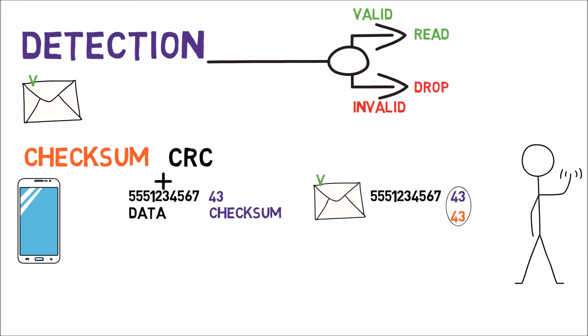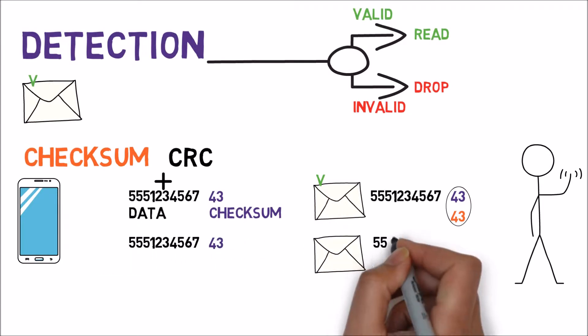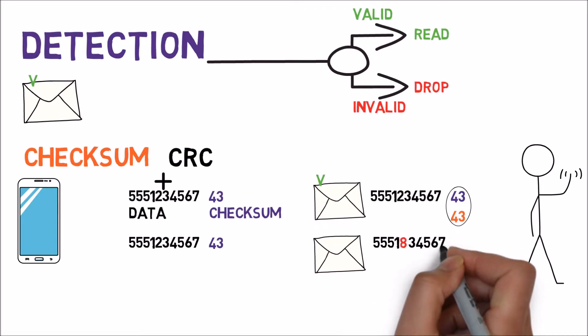What happens in case of an error? Let's say for instance that the digit 2 was replaced by an 8. Now even though the sender sent the following stream, the receiver sees something a bit different. The receiver sees 5 5 5 1 8 3 4 5 6 7 43. Now when the receiver calculates the checksum, she adds all the digits and gets 49. Since this value is different from the checksum value specified in the original frame (43), the frame is considered to be invalid.